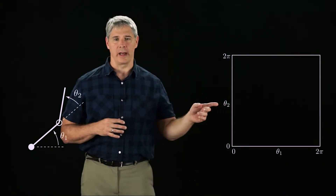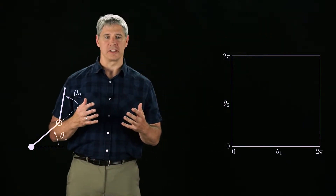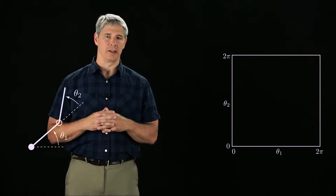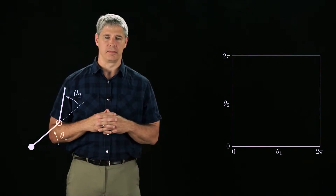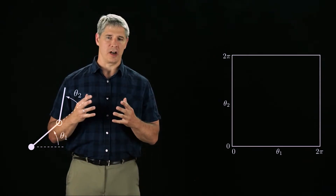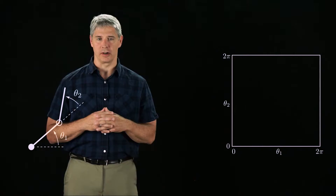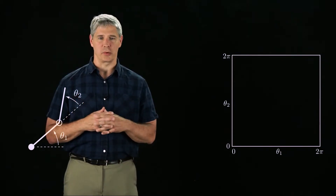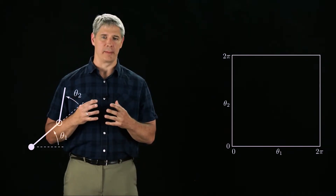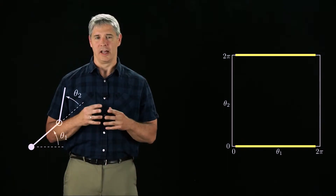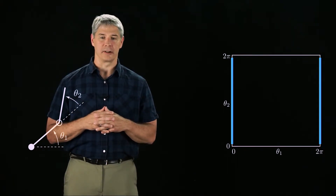Let's use the 2R robot as an example. Its C-space is represented by a square in the plane, where one axis corresponds to theta 1 and the other axis corresponds to theta 2. As we saw in Chapter 2, the topology of the C-space is actually a torus, so when we represent it as a square, we have to remember that the top and bottom edges are connected to each other, and the left and right edges are connected to each other.